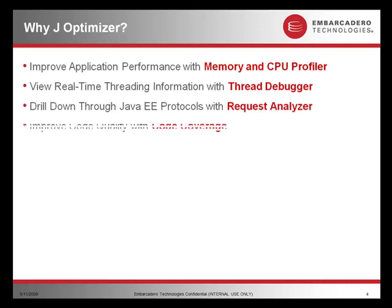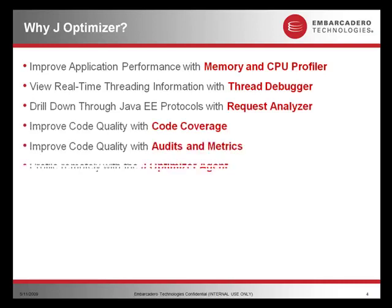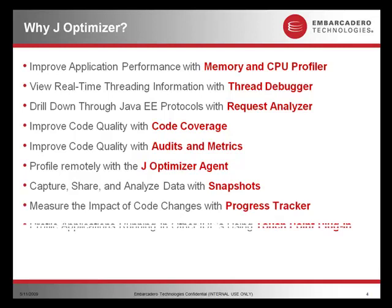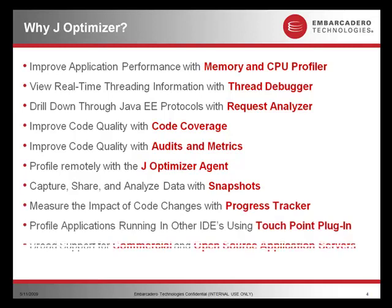Here's a long list of reasons why J-Optimizer might prove valuable for you in your environment. The top five features we're going to talk about today are memory and CPU profiler, the thread debugger, request analyzer, code coverage, and audits and metrics.